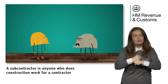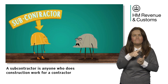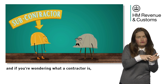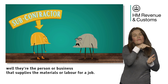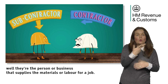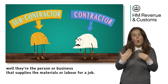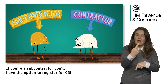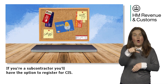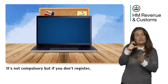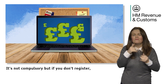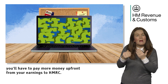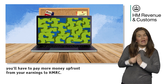A subcontractor is anyone who does construction work for a contractor. A contractor is the person or business that supplies the materials or labour for a job. If you're a subcontractor, you'll have the option to register for CIS. It's not compulsory, but if you don't register, you'll have to pay more money upfront from your earnings to HMRC.